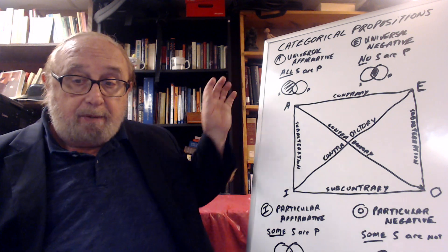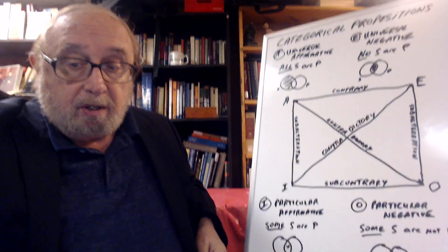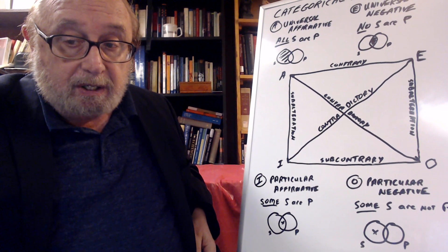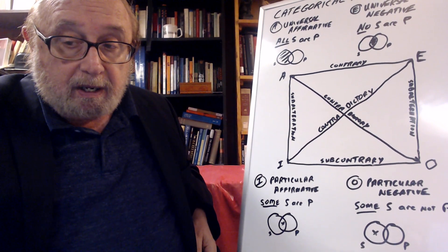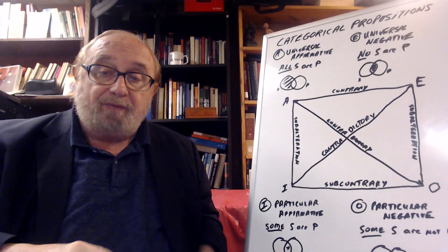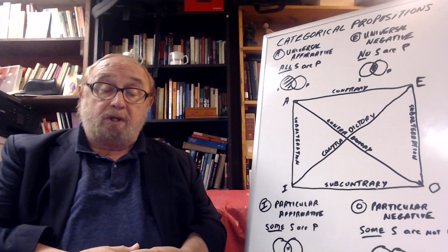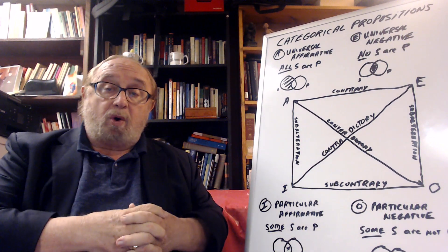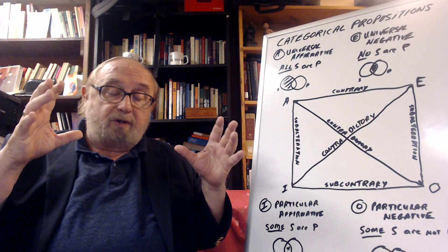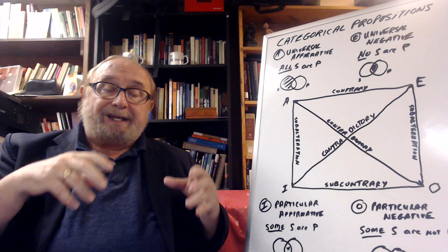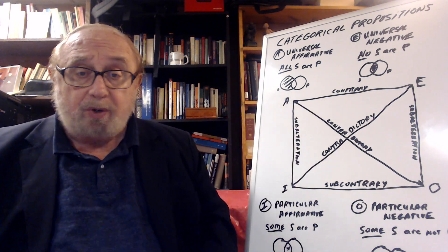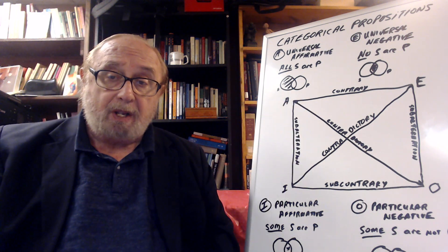Then we have the I statements, the particular affirmative. This is an I statement, which is some S are P, and the particular negative, some S are not P. A universal statement either has all or no in the beginning. So all S are P — all dogs, that means every dog, everything that could be considered a dog in the category of dogs, is within the mammal category. So there are no dogs outside of mammals. It's universal.